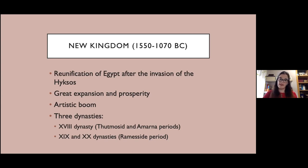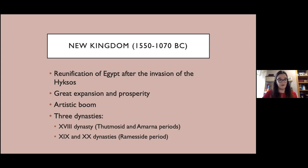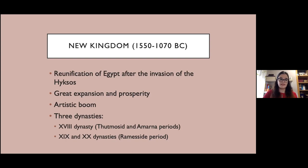The 19th and 20th dynasties are called the Ramesside period because of the name of many of the pharaohs. During this period most of the traditional religious beliefs were restored, although some changes remained. With the death of Ramesses III, the decline of the Egyptian empire began due to the division of power between the king and the priest.